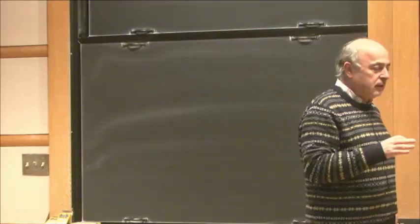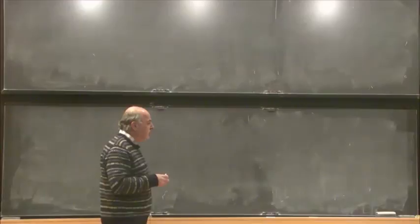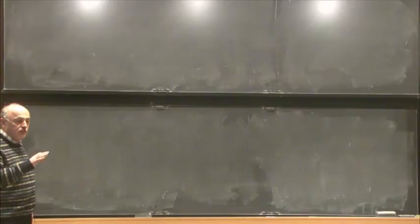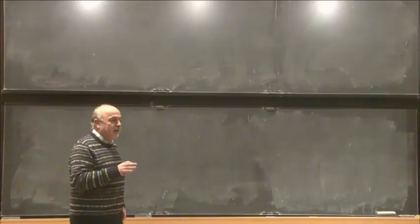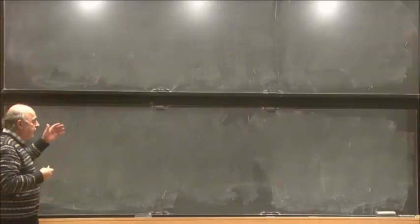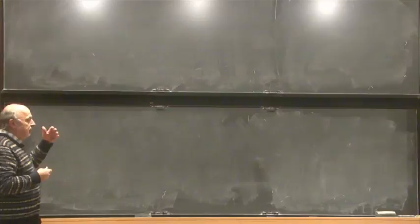I'll talk about my book which is still in progress. It is a natural continuation of my previous work on vanishing cycles for formal schemes, which was related to number theory. This work, as far as I understand, has no relation to number theory — it is related to complex analytic geometry. It's about vanishing cycles, and vanishing cycles sheaves will appear in three frameworks: algebraic geometry, formal geometry, and complex analytic geometry.